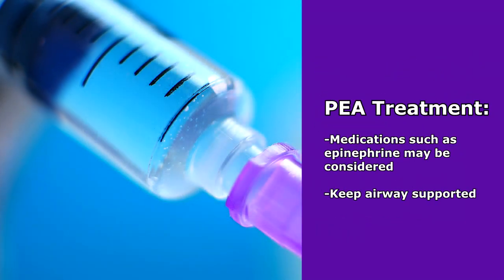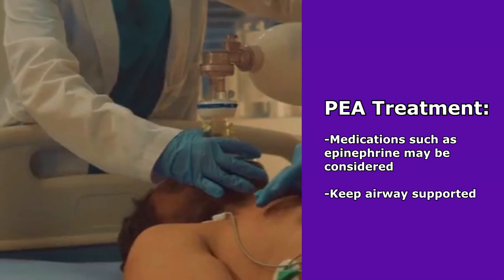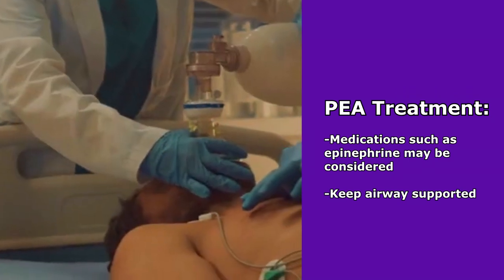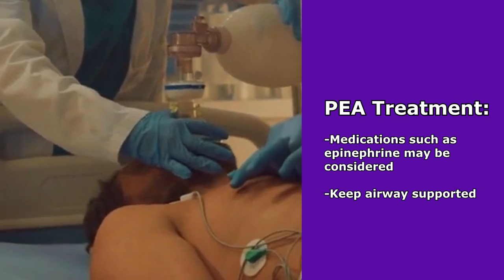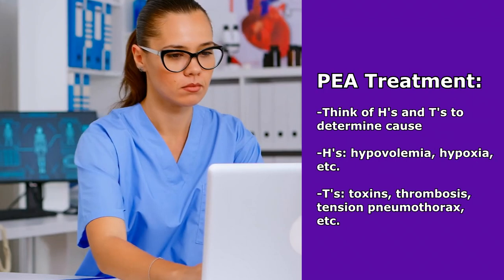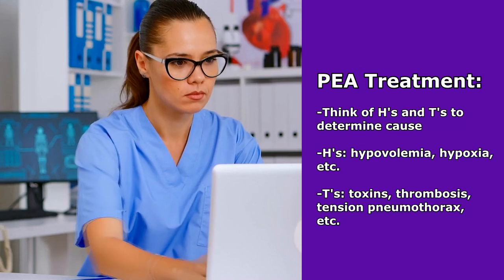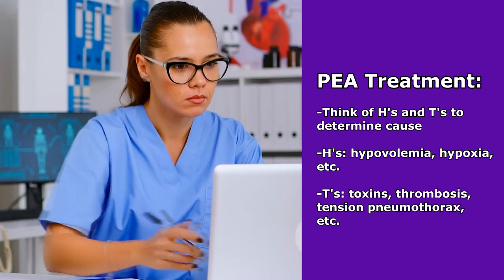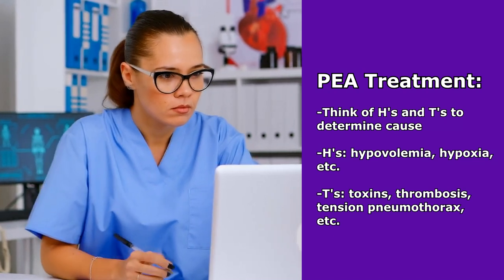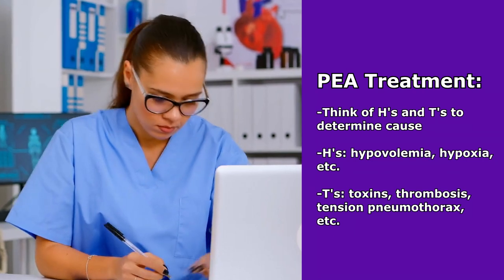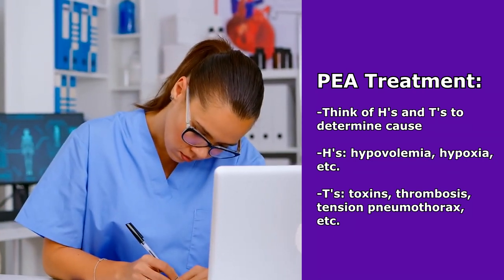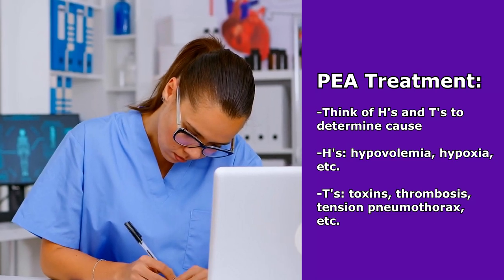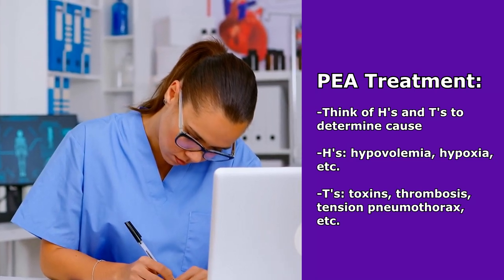Some medications that can be given include epinephrine, and we'll be supporting the airway throughout this. Throughout the time of trying to resuscitate this patient, we'll be thinking of the H's and the T's — what could be causing this PEA? For instance, is it hypovolemia? Is it hypoxia? Are there toxins involved? Do we have a clot like thrombosis? Is there a tension pneumothorax? And so forth.